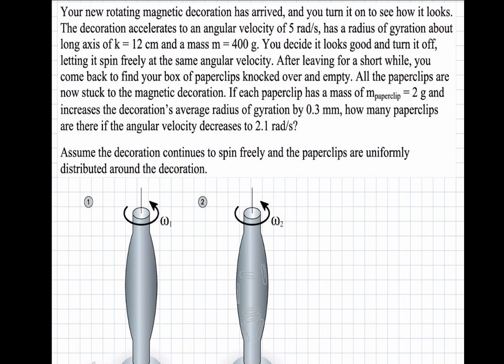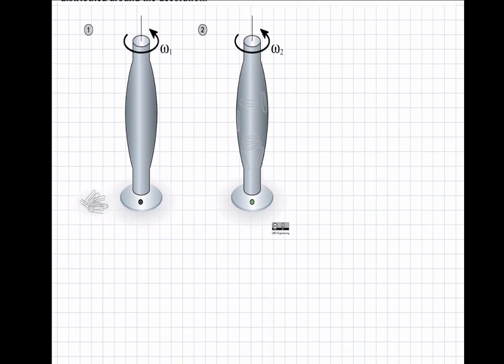We also have to assume that the decoration continues to spin freely, so there's no motor attached to it, and that the paper clips are uniformly distributed around the decoration. So this is clearly a conservation of angular momentum question.